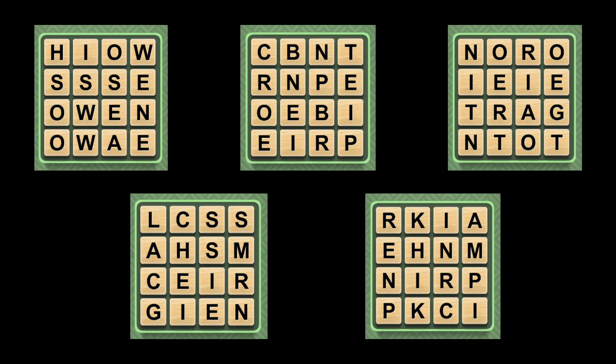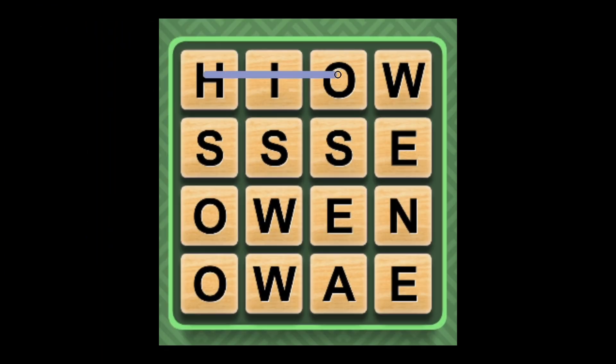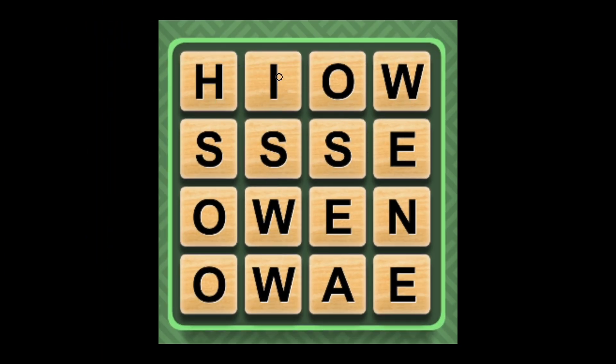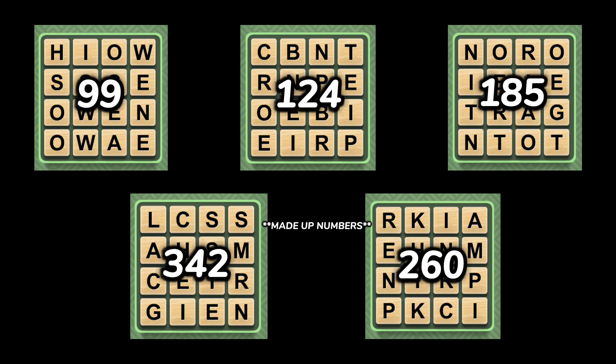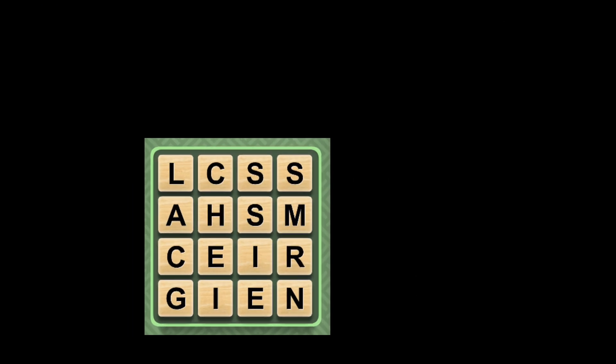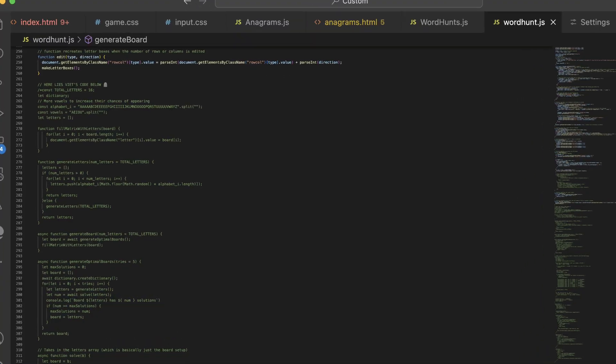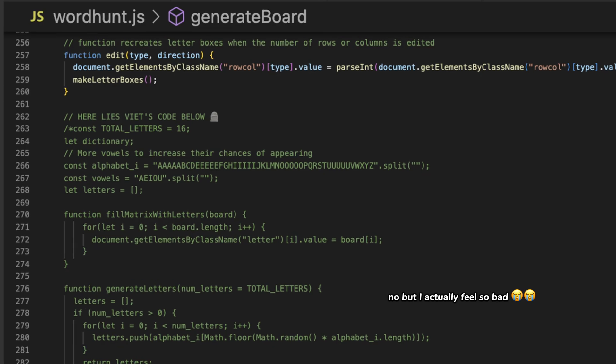The idea was to generate, say, 5 random boards, then repeating from each starting point, try to calculate how many total words can be created following all the possible path combinations. The board that generates the most words would be selected and displayed for the user. He wasn't able to make it totally work, and the letter frequency method used now is pretty decent enough that — sorry Viet — I've commented out your work completely.